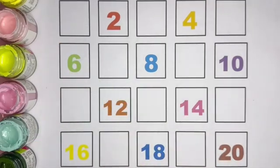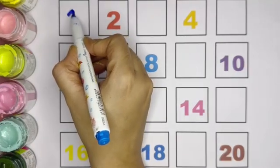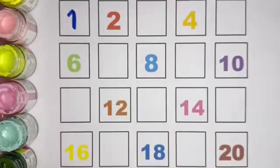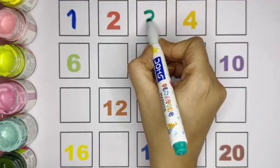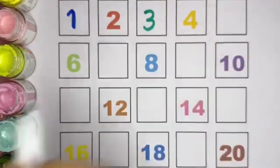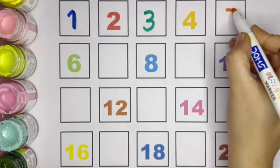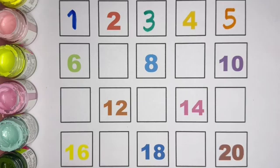Kids, now let's write the missing numbers. First number is 1, number 1, 1, 2. After 2, which number? 3, number 3. Next is, which number is missing kids? 3, 4, 5. This is number 5.